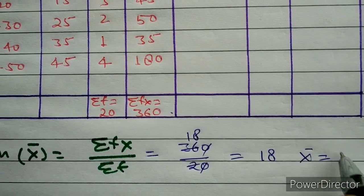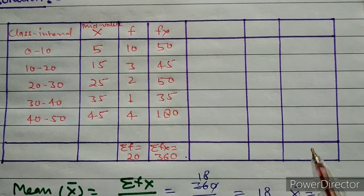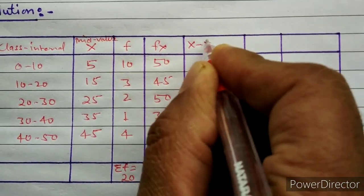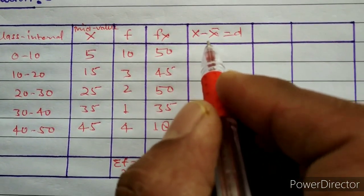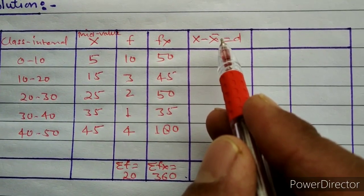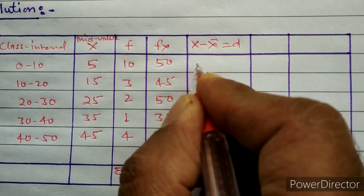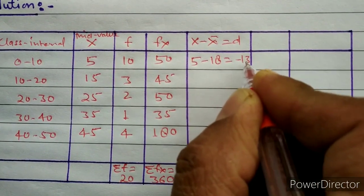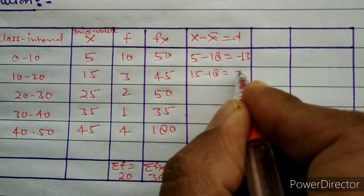In the next column we will write x minus x̄, where x̄ equals 18, to get the deviation. For example, 5 minus 18 gives minus 13. The next one is 15 minus 18, giving minus 3. Similarly we will calculate the deviation for the rest of the values.